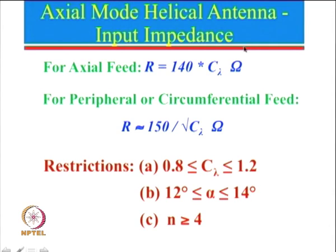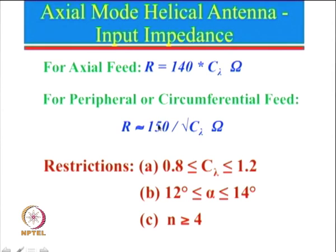Since it is a traveling wave structure it has a fairly large bandwidth and its resistance is constant over a very large bandwidth. If the feed is an axial feed — that is, feeding along the helical axis — it is known as axial feed. If you feed along the periphery or circumference, that is known as peripheral or circumferential feed. For axial mode, the resistance R is given by one particular formula, and for peripheral feed R is given by another formula. The beauty of this axial mode helical antenna is that the imaginary part is close to zero, giving broader bandwidth.